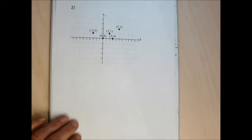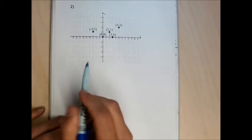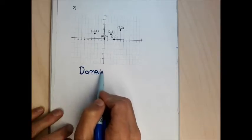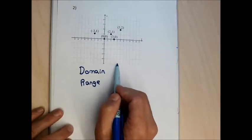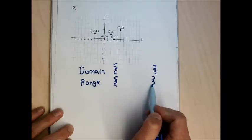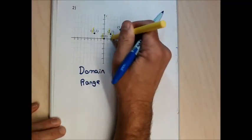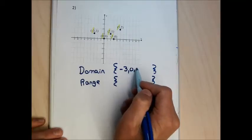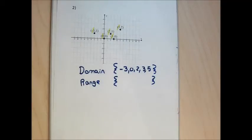Problem 2 is a very common problem for students to get no credit on. It asks for domain and range but gives points that aren't connected. It's absolutely wrong to connect those points. When you're given a graph that's just a scattering of disconnected points, it's correct to write the domain and range not with round or square brackets, but with squiggly set braces. For the domain, you just write down the x-coordinate of each and every point that's marked, separated by commas.